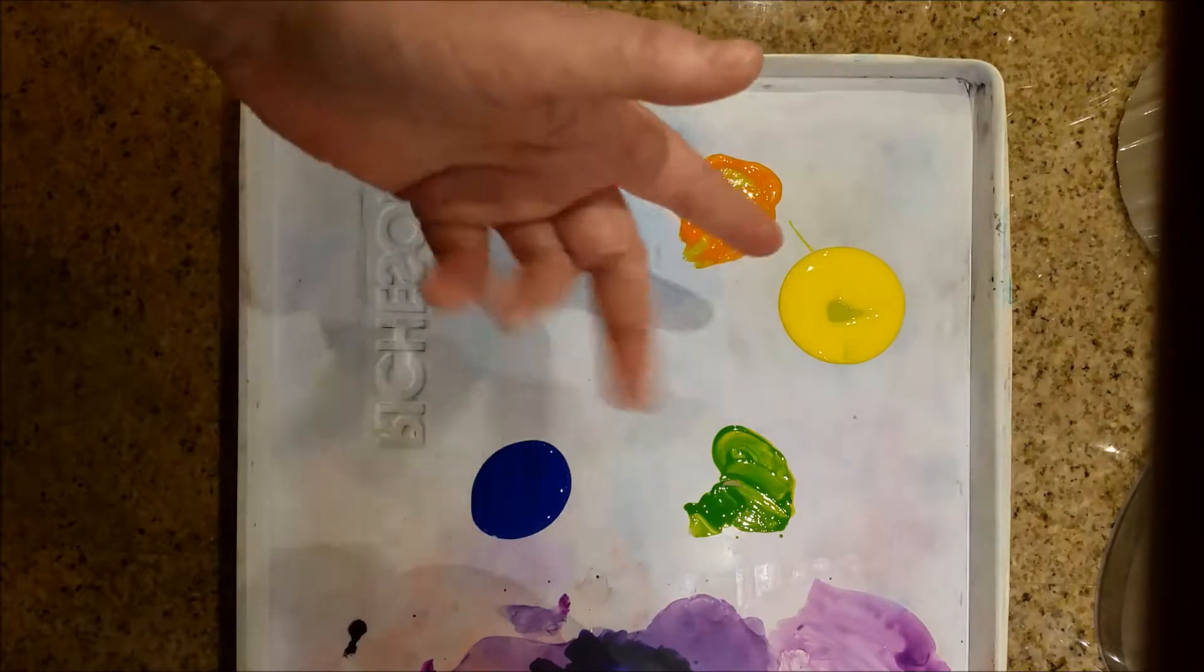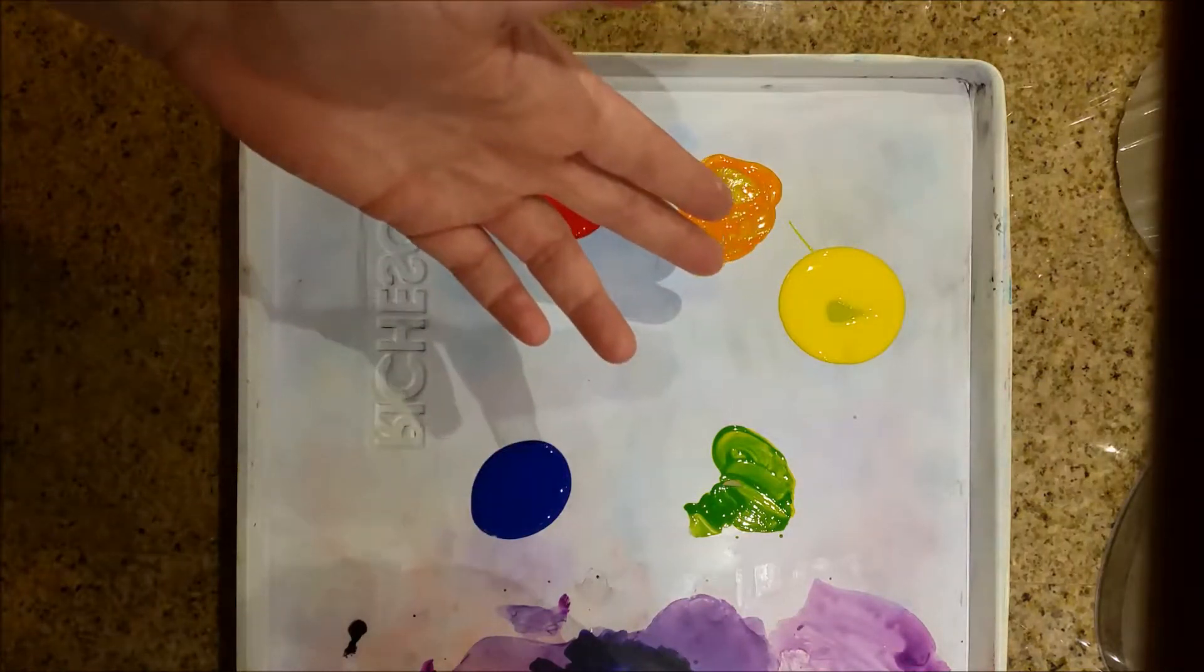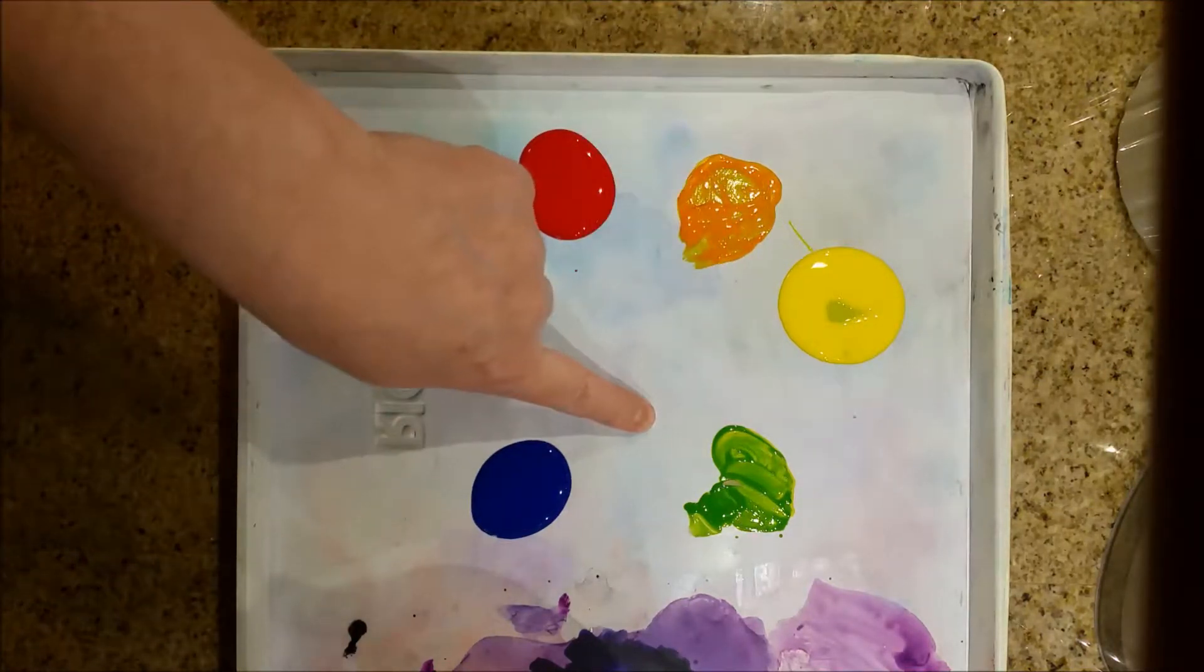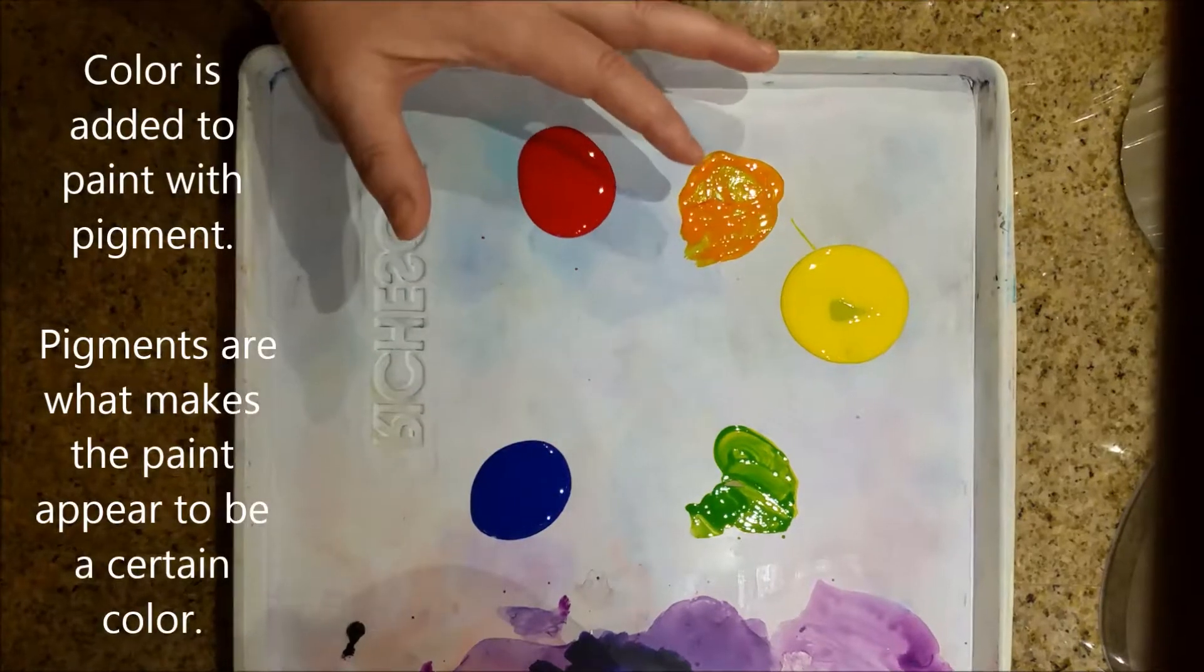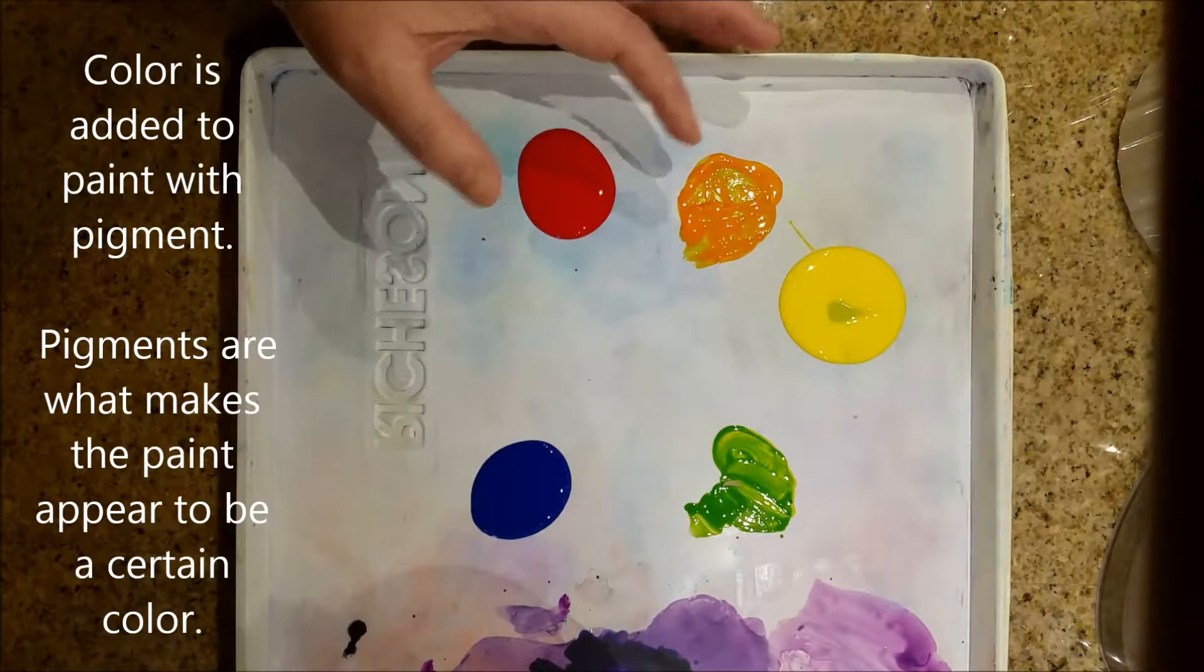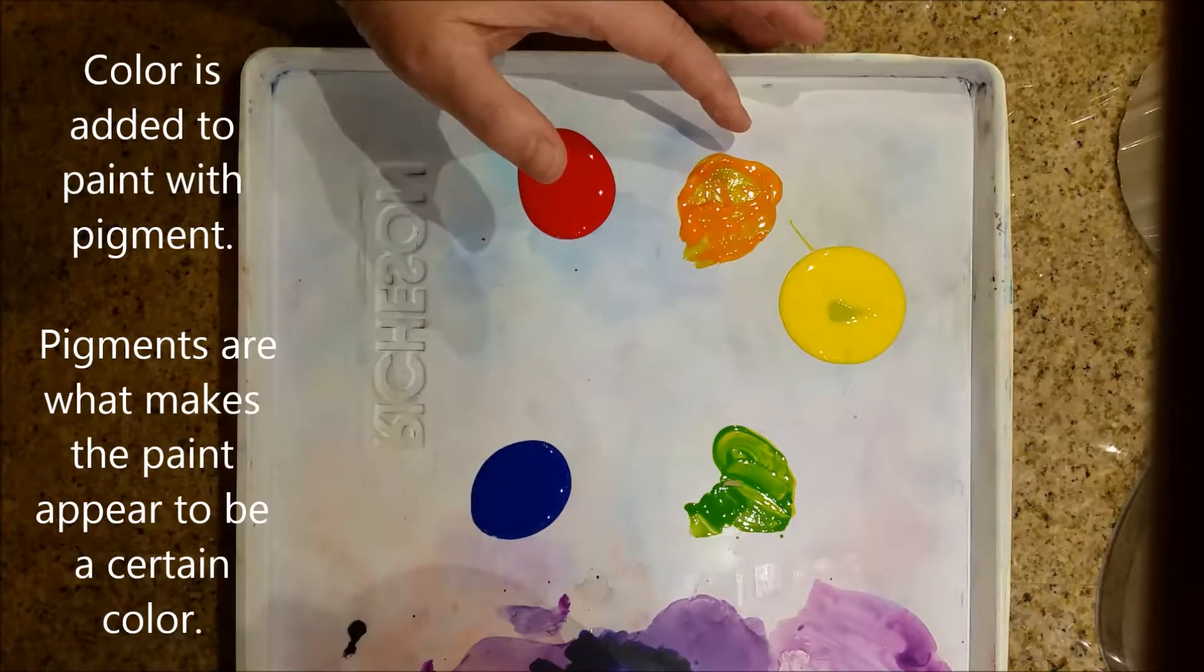As you can see here, when you mix two primaries, you get a secondary. So far we have green as a secondary between yellow and blue. Yellow and red primaries produce the secondary orange.